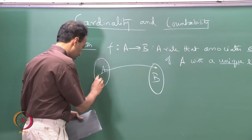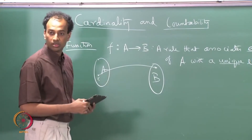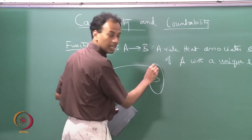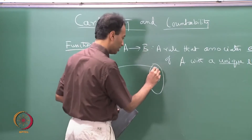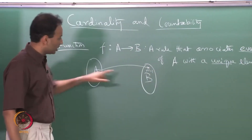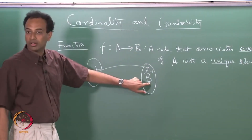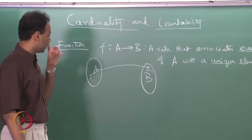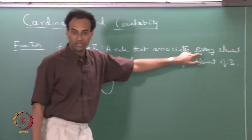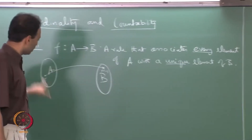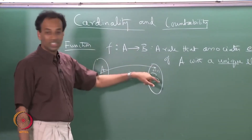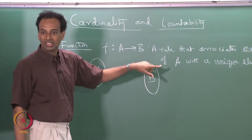If you take an element x in A, then there is a unique element of B, f of x, that is associated with it. There cannot be more than one — this unique element. Also, every element of A must have a corresponding element; you cannot leave out anything.